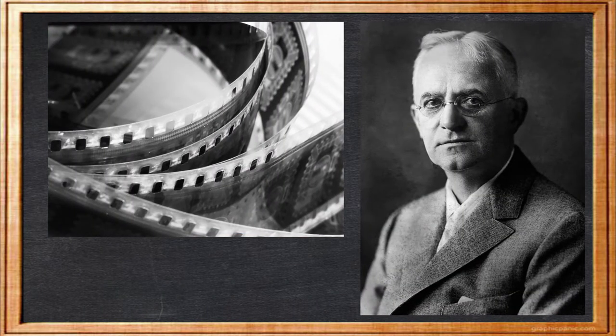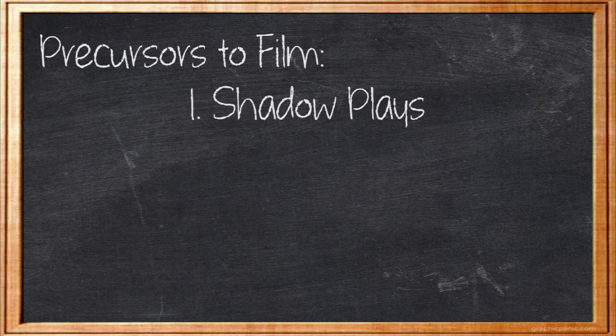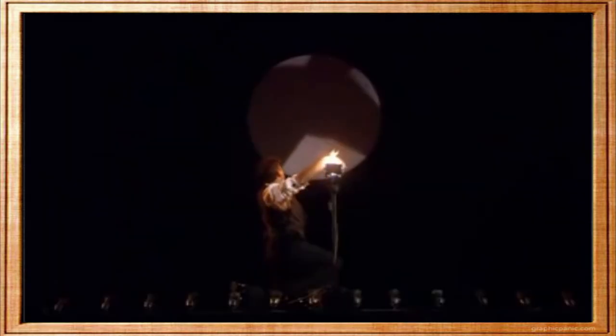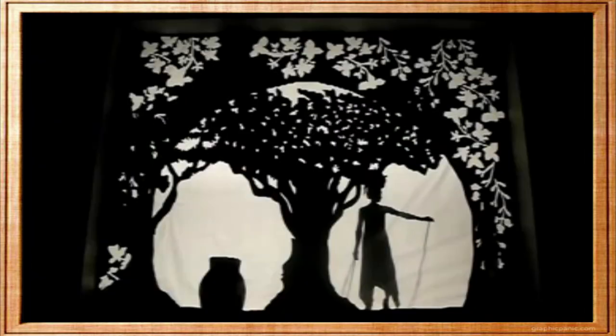Eastman invented celluloid film sometime around 1889, but if we take a quick trip down to China in the Han Dynasty, 200 BC, we have the first record of shadow plays. Shadow plays are… well, think shadow puppets, only less this… and more this.